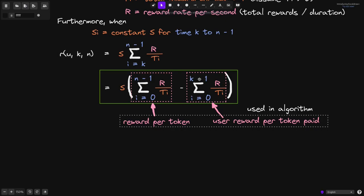This value on the right will be stored in a mapping called user reward per token paid. This value will be stored for each user, and anytime a user deposits or withdraws, this value will be updated. By keeping track of these two values, the staking contract will be able to efficiently compute the amount of rewards earned by the user.